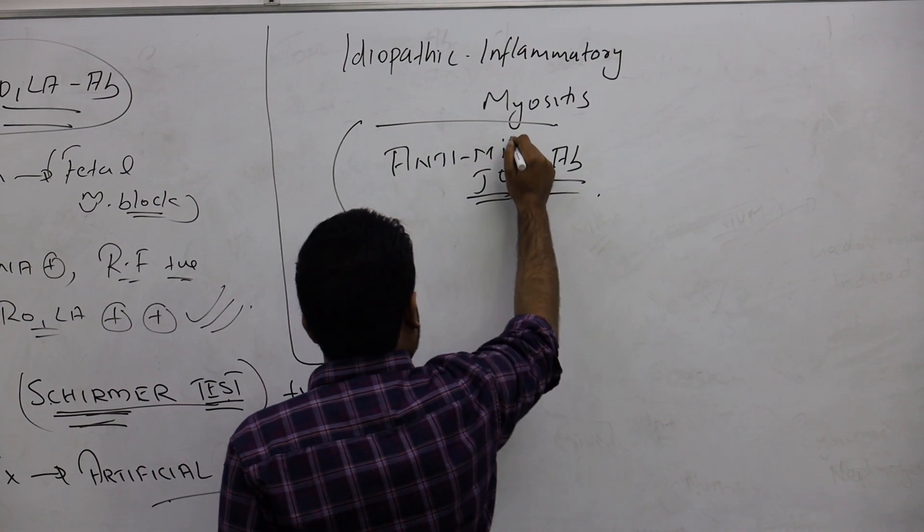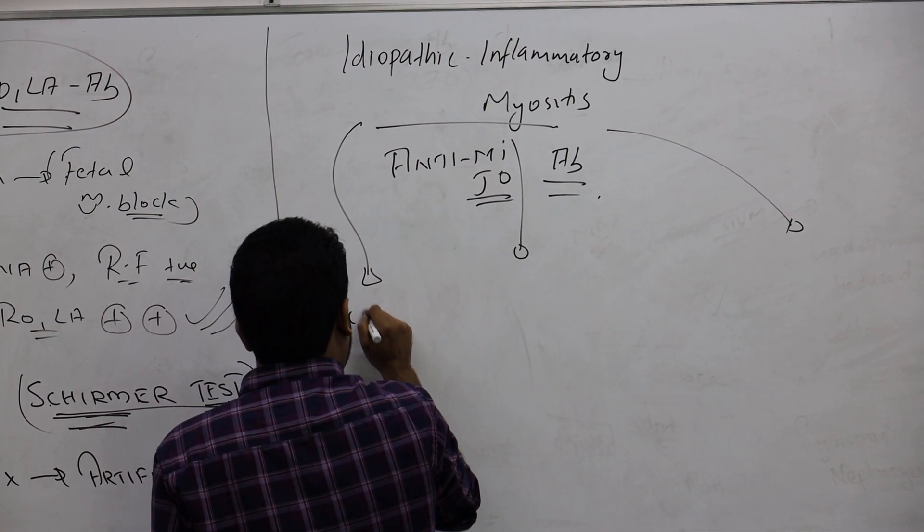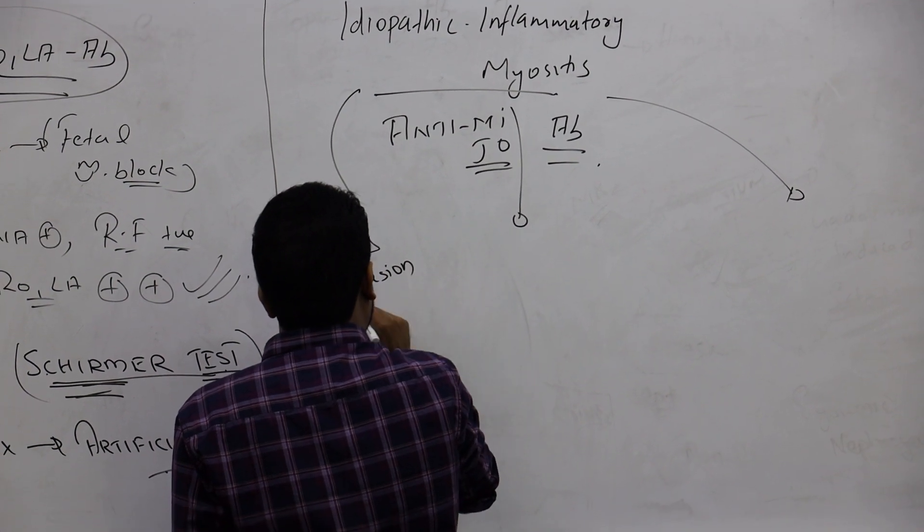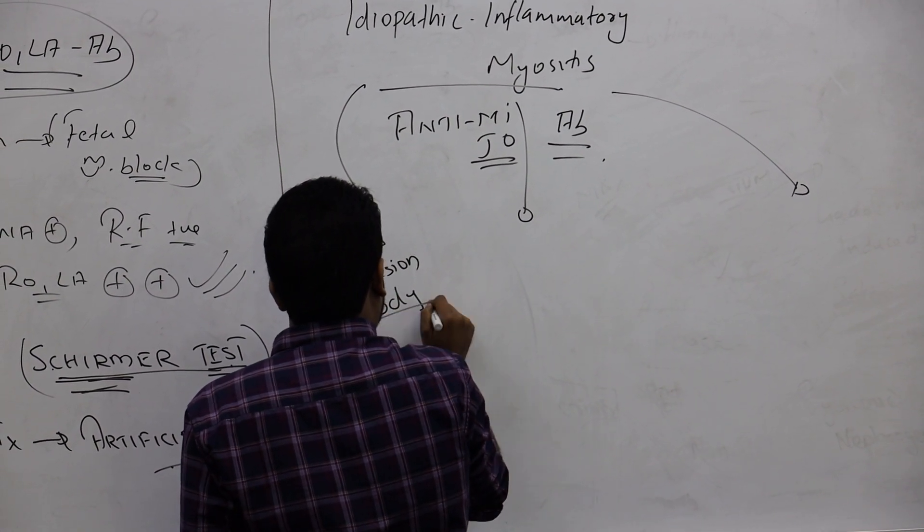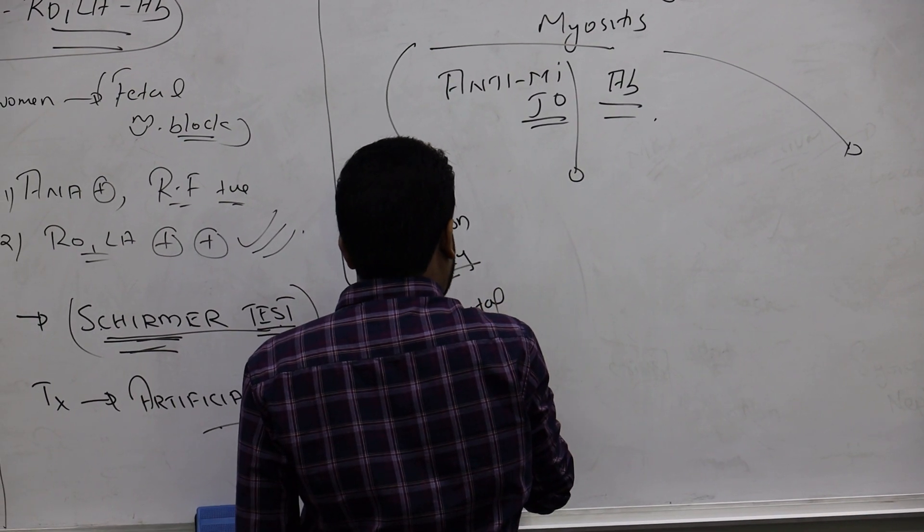Actually, this is of three types. Mainly, we have inclusion body myositis. Only remember, they will affect your distal muscles. Distal muscles are inflamed.